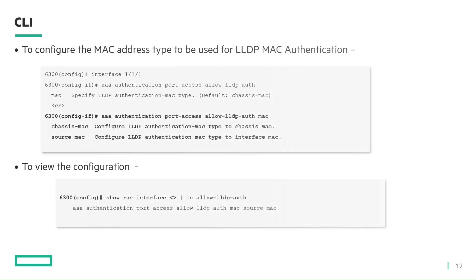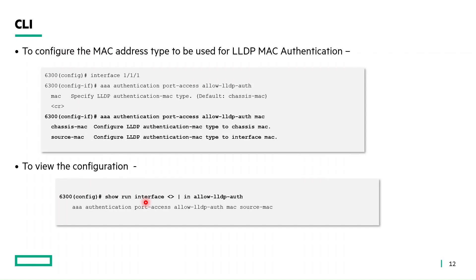Let's look at the configuration. The new CLI introduced as part of this feature is: AAA authentication port-access allow-lldp-auth MAC, where the default is chassis MAC, or source MAC to support dual port APs. There is no dedicated show command; you can use show run interface and grep for allow-lldp-auth or the CLI sub-option.